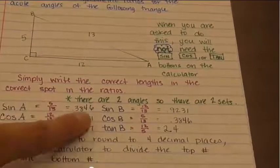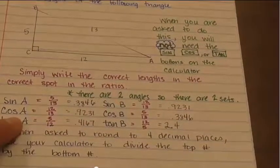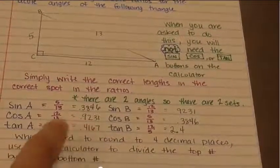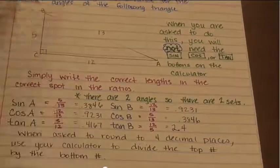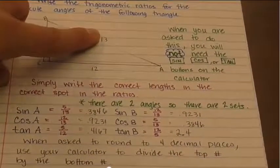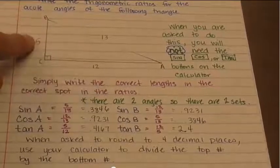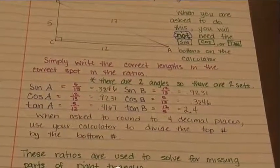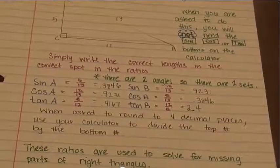You can plug 5 divided by 13 into your calculator to get the decimal. You need to get comfortable with rounding to the fourth decimal place unless told otherwise. The cosine of angle A is adjacent over hypotenuse — 12 over 13 — which gives 0.9231. Tangent is opposite over adjacent, so 5 divided by 12, or 0.4167. For angle B, sine is 12 over 13, cosine is 5 over 13, and tangent is 12 over 5. You can use your calculator to divide, and there's a setting to stop at the fourth decimal place so you don't have to round manually.